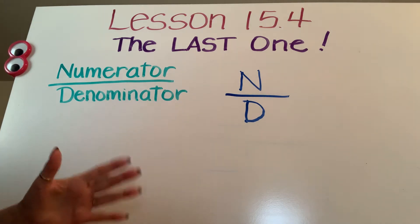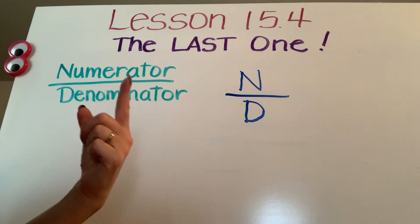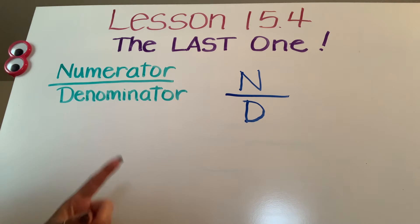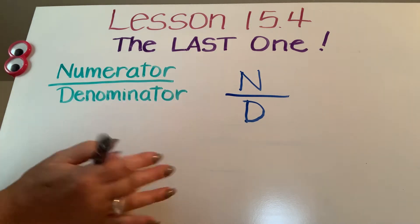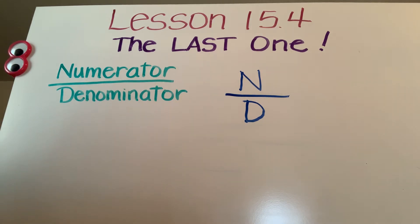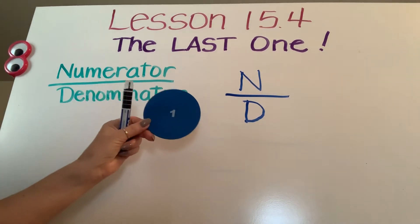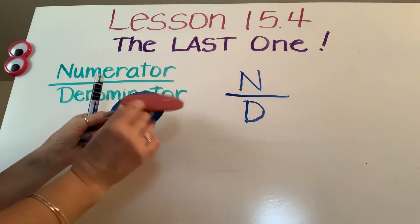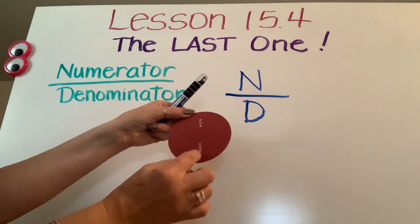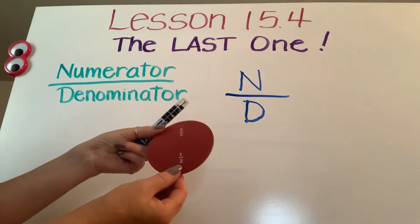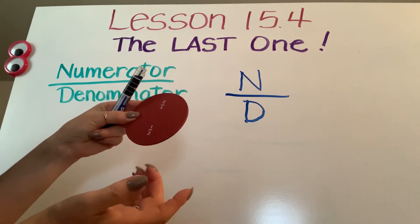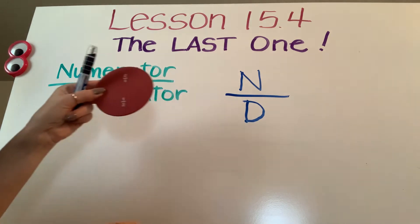Now what if I took all the pieces? Then that's going to equal one. If those numbers are the same, that equals one whole piece, one whole number, one whole object. If I cut it into two pieces, each piece is worth one, but my bottom denominator means I've cut it into two parts.